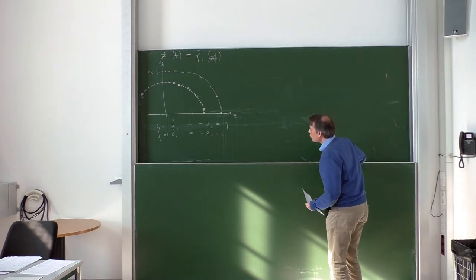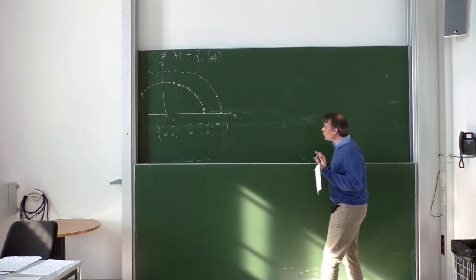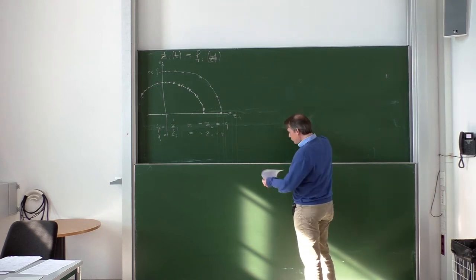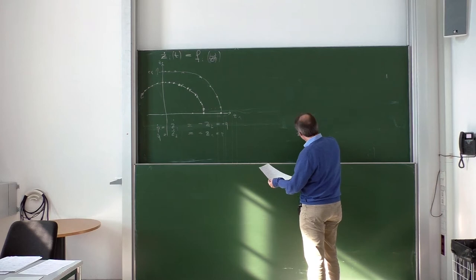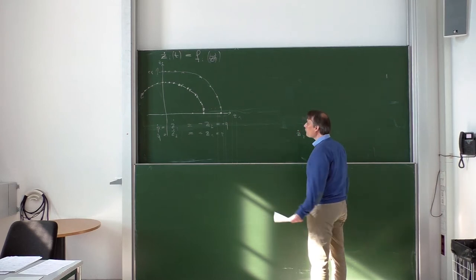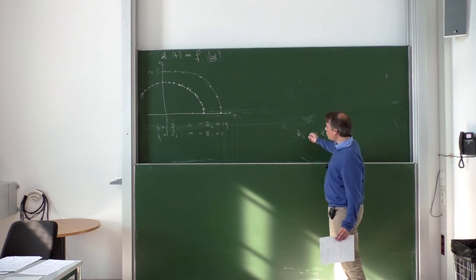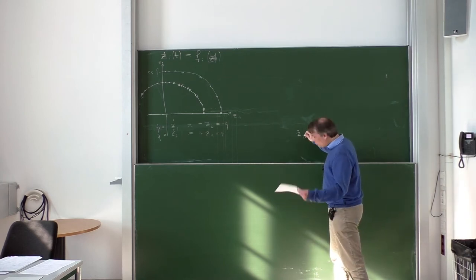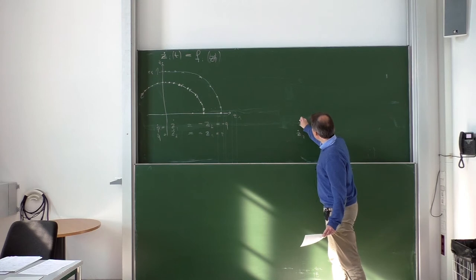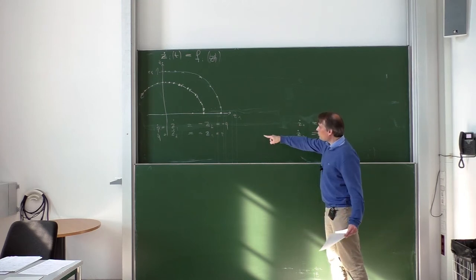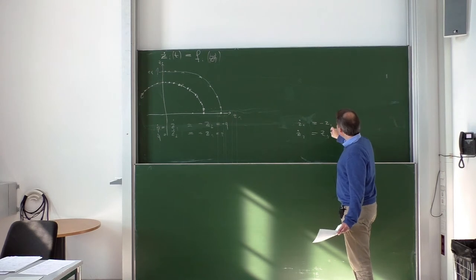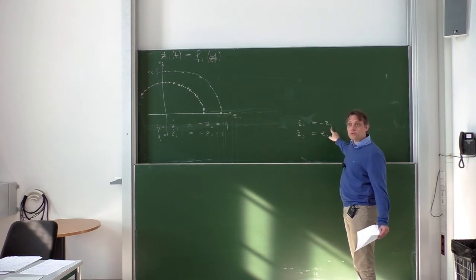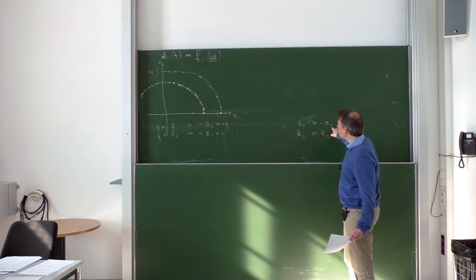Now let us modify the system a little bit, starting from the differential equation. The second equation stays the same: z2 dot equals z1. But here we do something different — z1 dot is not equal to minus z2, but equal to minus z1. That's the only difference: we have z1 instead of z2.